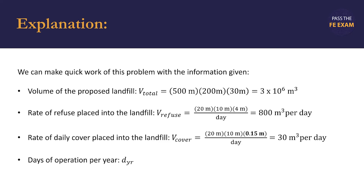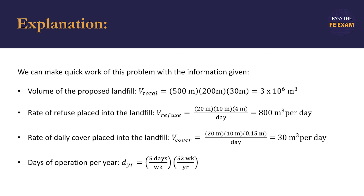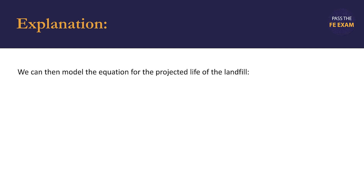We need to make an assumption on the number of days of operation per year — we'll call this D sub year. Dump operations are Monday through Friday, five days a week, all year, no holidays. There are 52 weeks per year, so this works out to five times 52, or 260 working days per year. We now have enough information to create a rough model based on these averages. The life of the landfill is the total volume divided by what we add into it — the volume of refuse plus the volume of cover — divided by the number of working days per year. When all is said and done, we will have an answer in units of years.